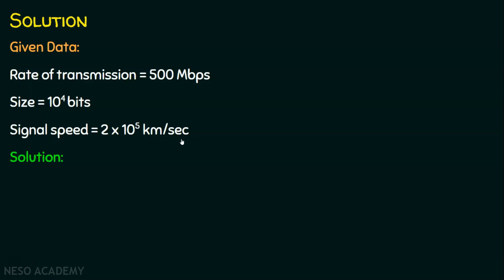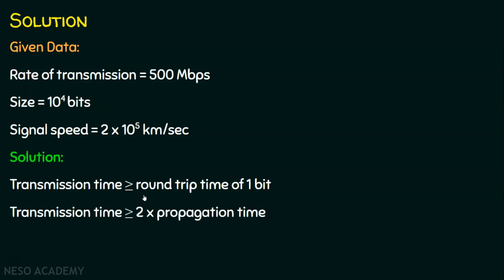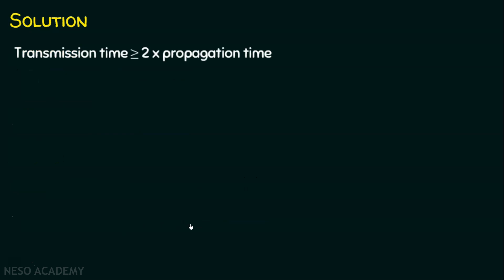We know the transmission time is greater than or equal to the round trip time of one bit. The round trip time is two times the propagation time. Substituting, we get transmission time ≥ 2 × propagation time. If you want to know how we derived this, watch my previous lecture titled 'Round Trip Time'.